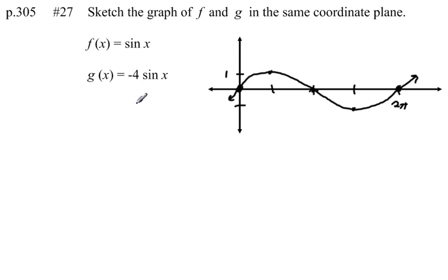The second function, g(x) equals negative 4 times sine of x. How does that negative 4 make things different? First of all, the negative is going to flip this graph across the x-axis. So instead of going up and down, it's going to start by going down and then up.